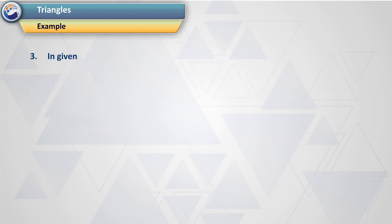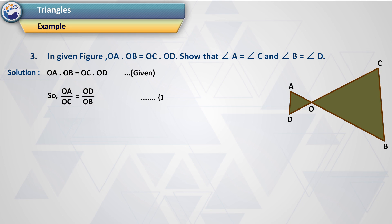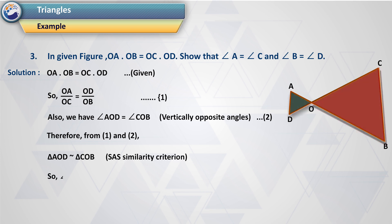Example 3. In the given figure, OA × OB = OC × OD. Show that angle A = angle C and angle B = angle D. Solution: OA × OB = OC × OD (given), so OA/OC = OD/OB — equation 1. Also, angle AOD = angle COB (vertically opposite angles) — equation 2. Therefore, from equations 1 and 2, triangle AOD is similar to triangle COB by SAS similarity criterion. So angle A = angle C and angle D = angle B, corresponding angles of similar triangles.